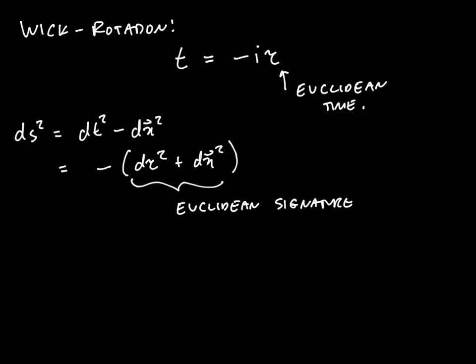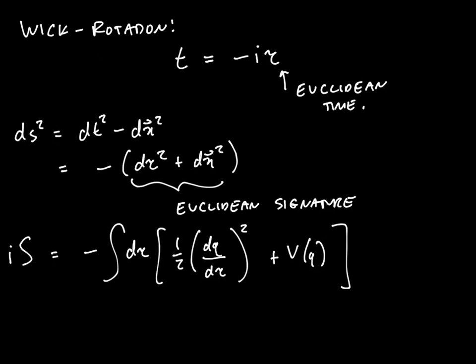In other words it now has a Euclidean signature and that is why we call this tau Euclidean time. Okay so what happens to the action? The same game on the action. So what I've done is I've just used the chain rule to replace every t with a tau. Okay so you end up getting a new minus sign here and the relative sign between the potential and the kinetic terms switches.